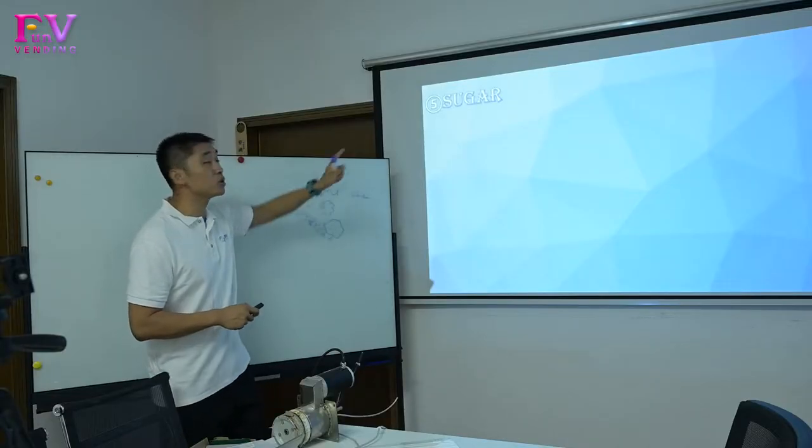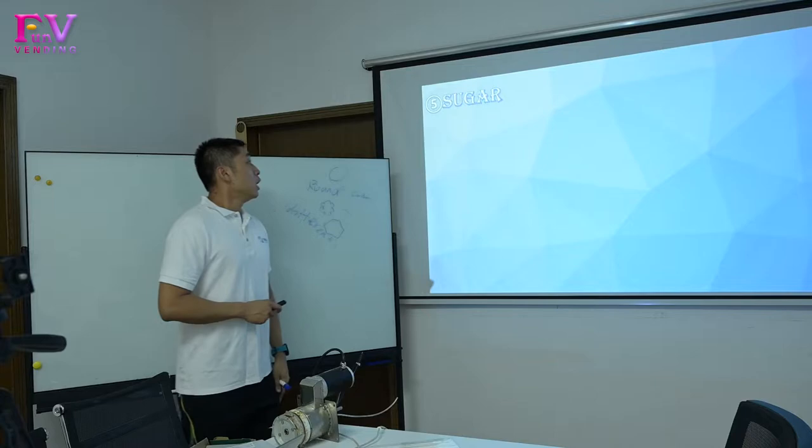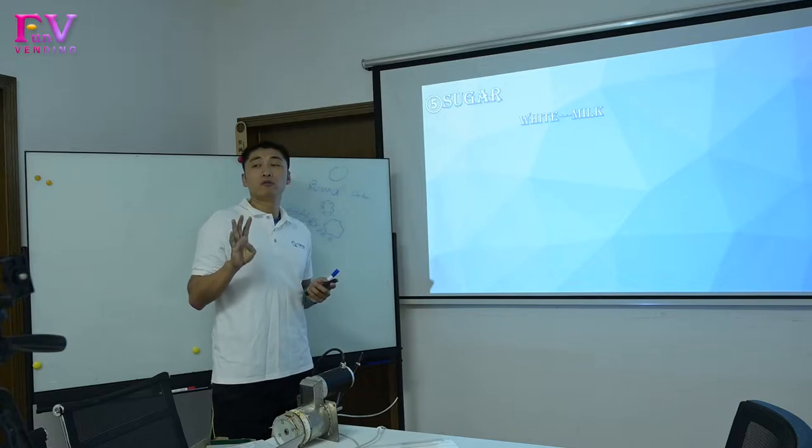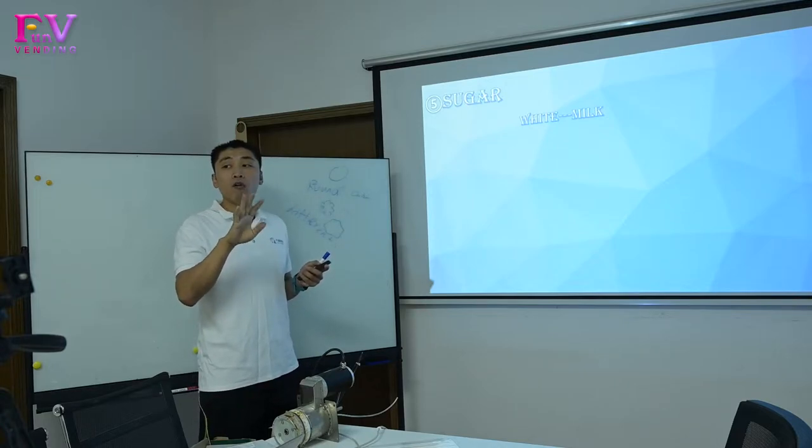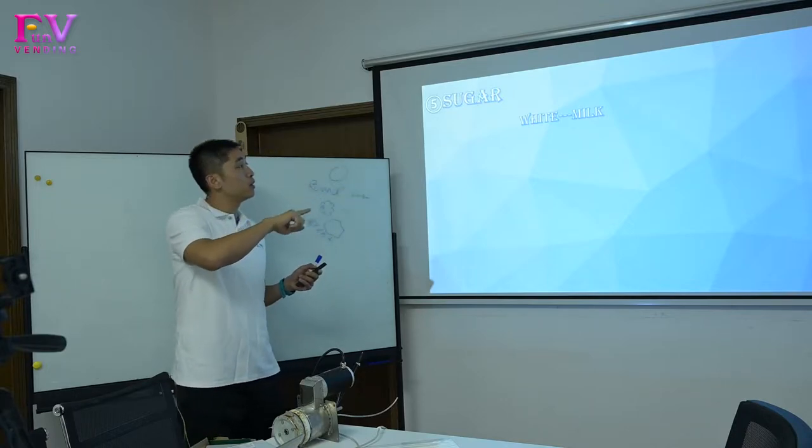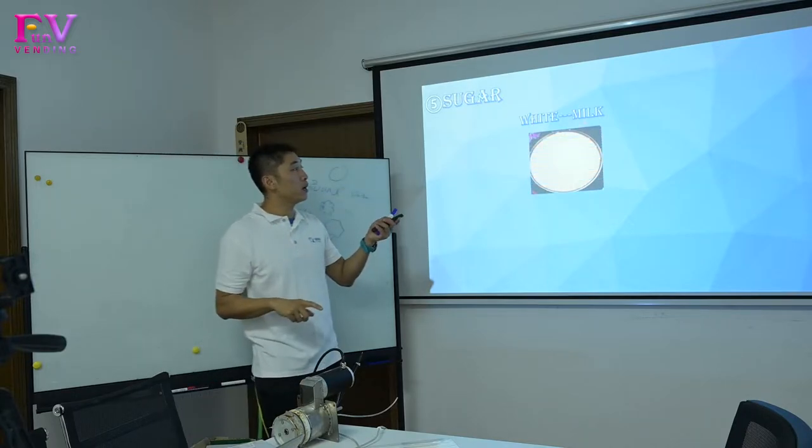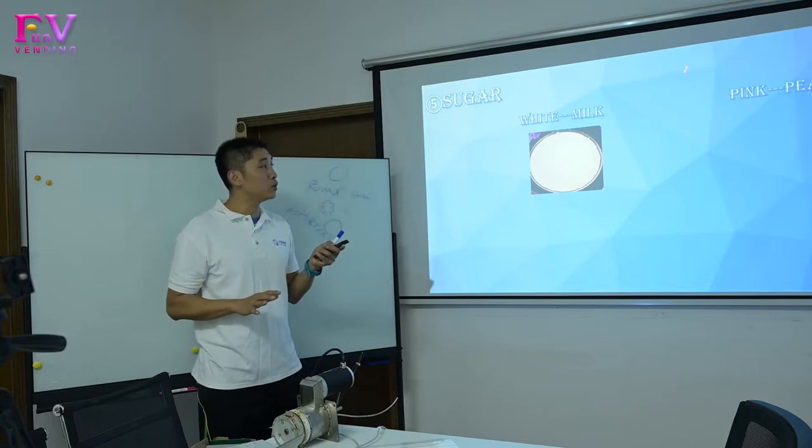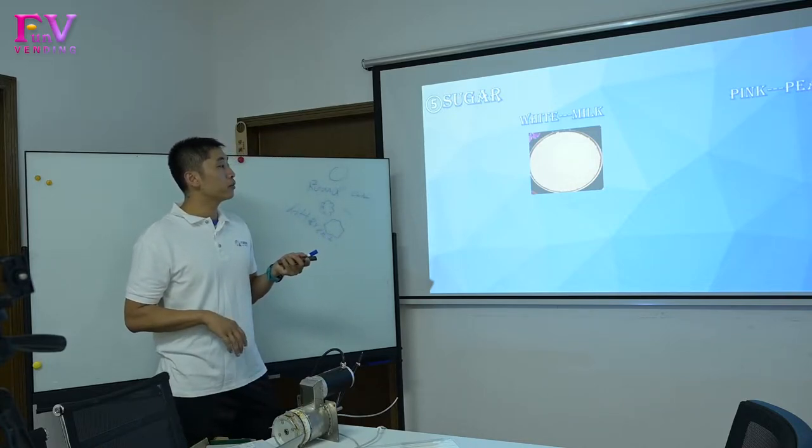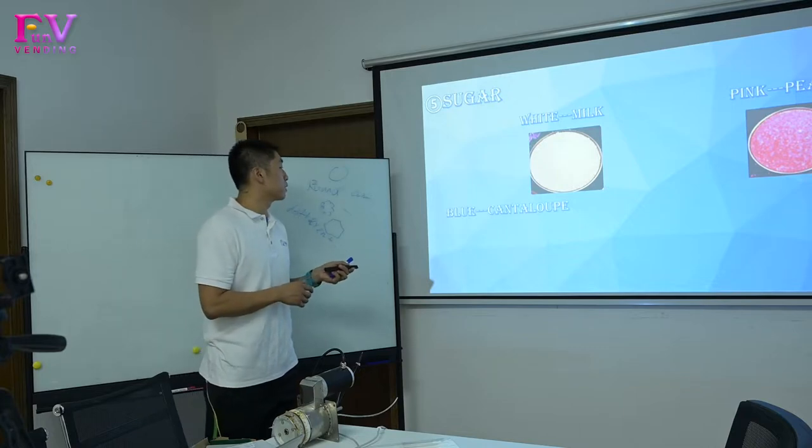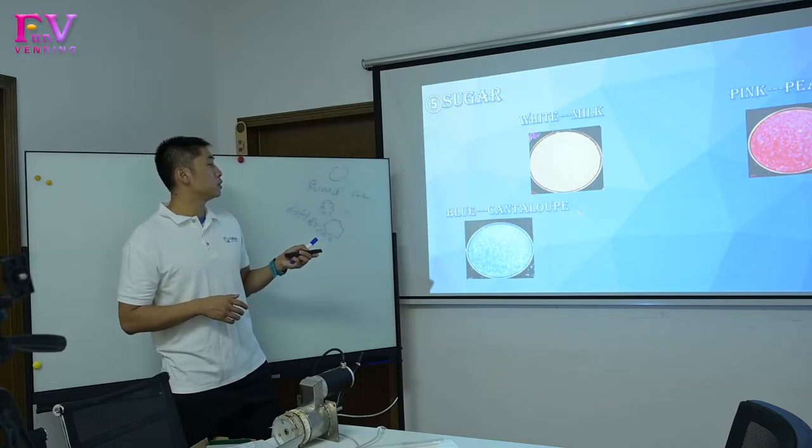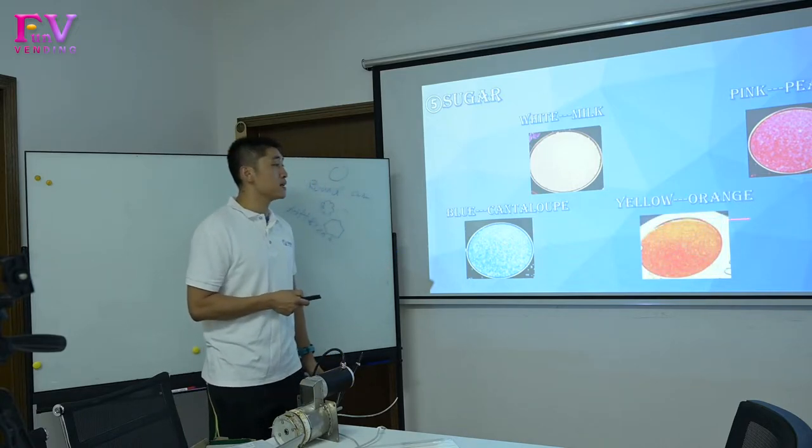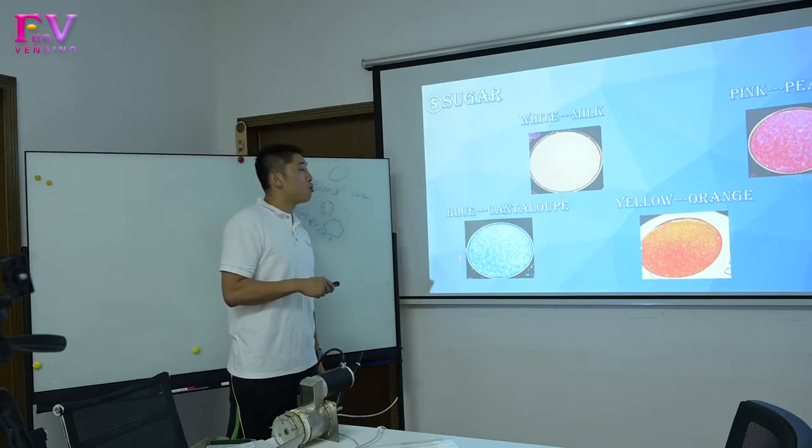In the sugar, we have four colors set in our machine. One is white with milk flavor, the other one is pink with peach flavor, the third one is blue candy loop, and the last one is yellow orange flavor. So it's all four colors.